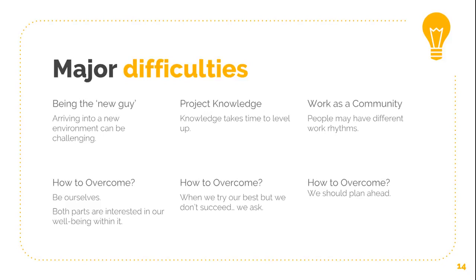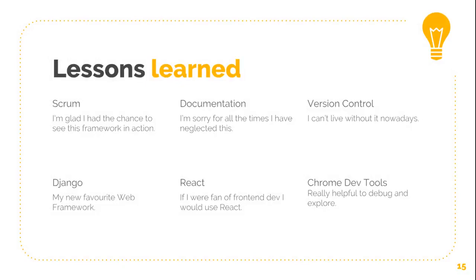Working as a community is very different from working on our own private projects — other people may have different rhythms. With that in mind, we should plan ahead and take advantage of a heterogeneous community driven by a common goal. Scrum is a managing framework known for typical two-week sprints and frequent meetings. Personally, I have mixed feelings about this approach: while it helps stay updated with recent developments, it also relies on peer pressure, which I don't see as the best approach for an open source community. Nevertheless, I'm glad I had a chance to see it in action.